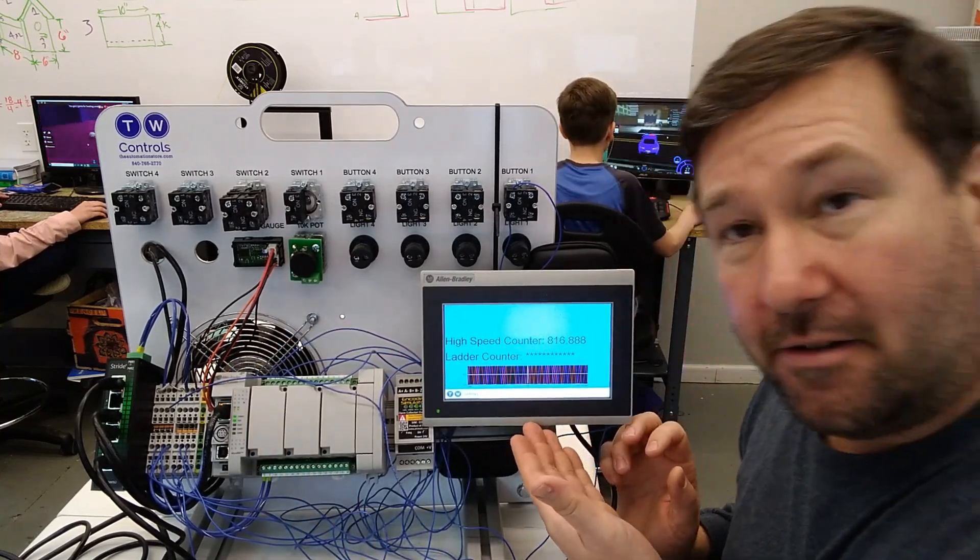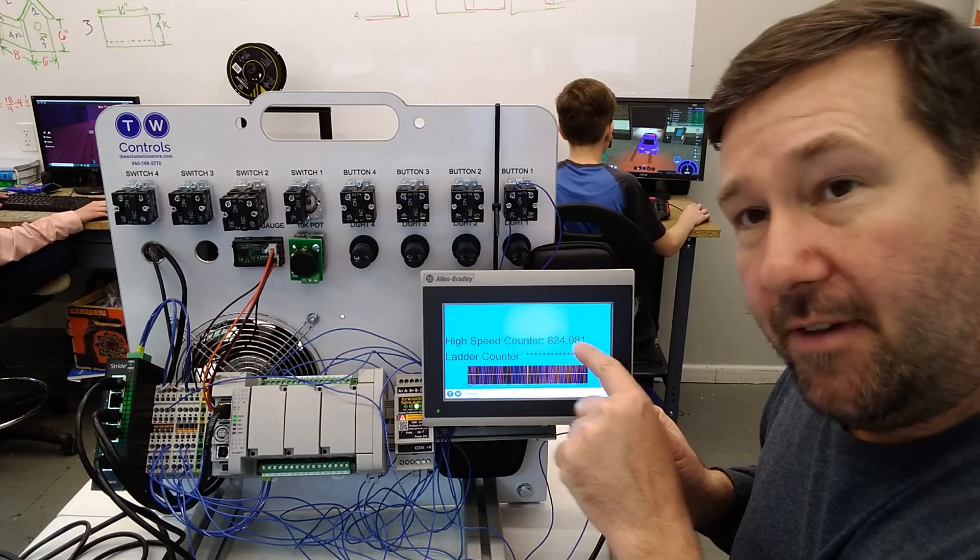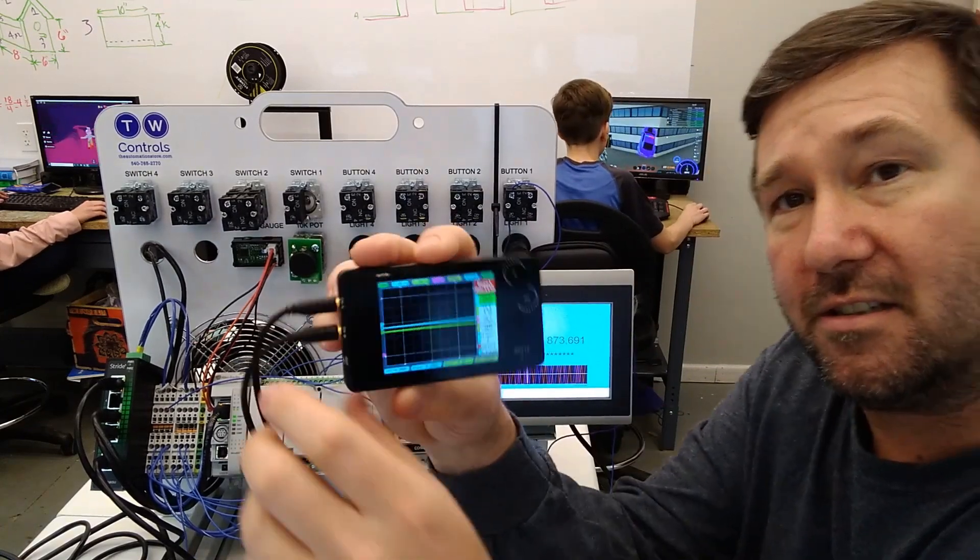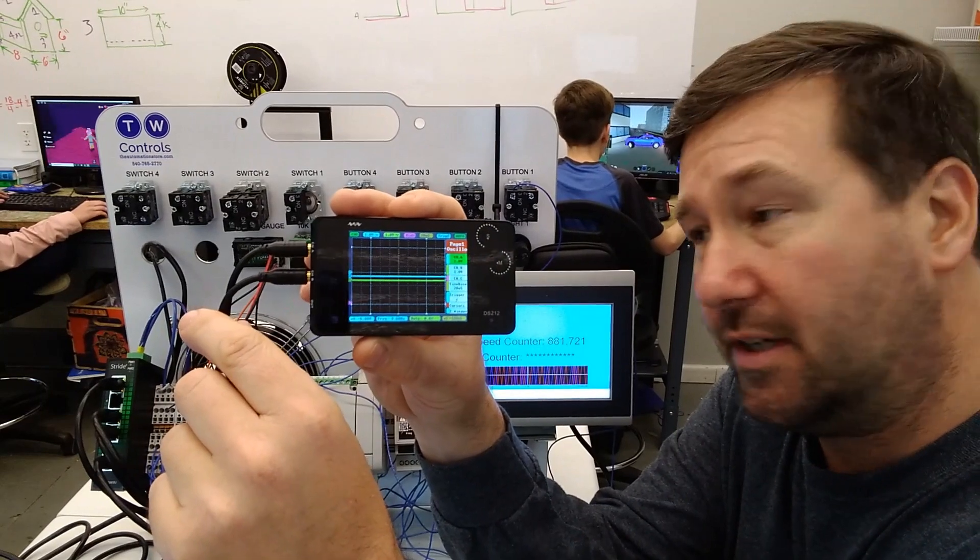We have our high speed counter going and also I have the value right here going up. But now I want to show you what it actually looks like when we connect a scope to it.